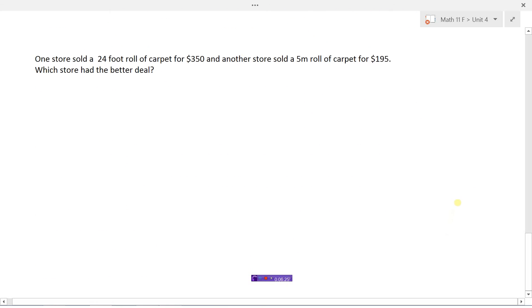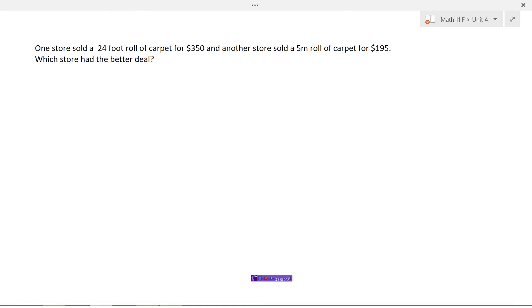Alright, we'll look at one last example here. One store sold a 24 foot roll of carpet for $350, and another store sold a 5 meter roll of carpet for $195. Which store, we're just kind of sticking with the same thing here, what's the better deal? So $350 for 24 feet, and the other one is $195 for 5 meters.